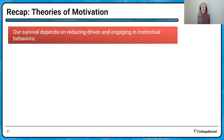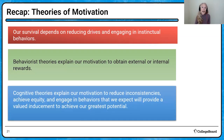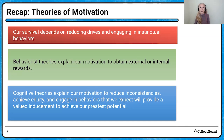Let's look at the summary of theories of motivation. We know motivation has to do with instinctual behaviors that help us survive. Behaviorist theories explain our motivation in terms of extrinsic and intrinsic rewards. Cognitive theories of motivation talk about being motivated to reduce inconsistencies, achieve equity, and engage in behaviors we expect will provide valued inducement — helping us achieve our greatest potential. One is very biological, one more behavioral, and one more cognitive.